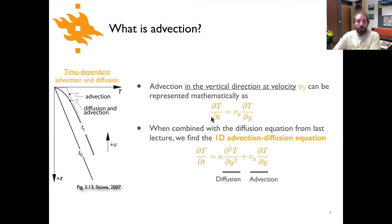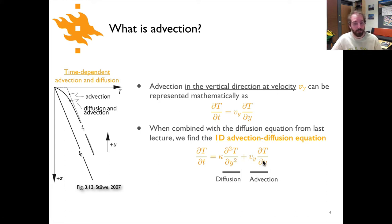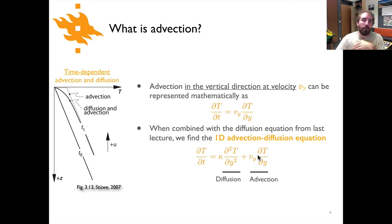In the previous video lectures we looked at the time-dependent heat conduction equation, and we can plug in this advection term to get: dT/dt equals a diffusion term — kappa times the second derivative of temperature with depth — plus the advection term, which is Vy times dT/dy. When we put these two things together we have the one-dimensional advection-diffusion equation, which is a very useful equation for considering heat transfer processes in the lithosphere.